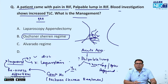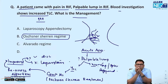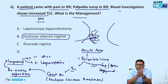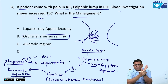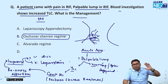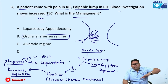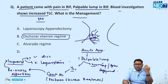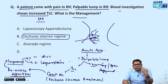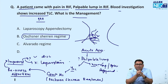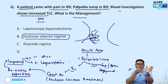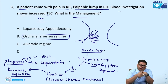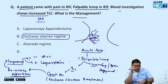Alvarado regimen does not exist — it is Alvarado criteria, which is used for diagnosing acute appendicitis clinically based on biochemical investigation, not radiological evidence. It includes pain in right iliac fossa, fever, anorexia or nausea/vomiting, elevated TLC, and left shift of the neutrophil curve or increased CRP — which is now the modified Alvarado criteria.